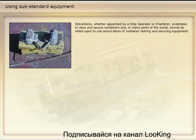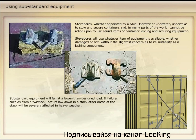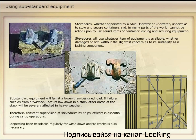Stevedores, whether appointed by a ship operator or charterer, undertake to stow and secure containers, and in many parts of the world cannot be relied upon to use sound items of container lashing and securing equipment. Stevedores will use whatever item of equipment is available, whether damaged or not, without the slightest concern as to its suitability as a lashing component. Substandard equipment will fail at a lower than designed load. If failure, such as from a twist lock, occurs low down in a stack, other areas of the stack will be severely affected in heavy weather. Therefore, constant supervision of stevedores by ship's officers is essential during cargo operations. Inspecting base twist locks regularly for wear down and/or cracks is also necessary.